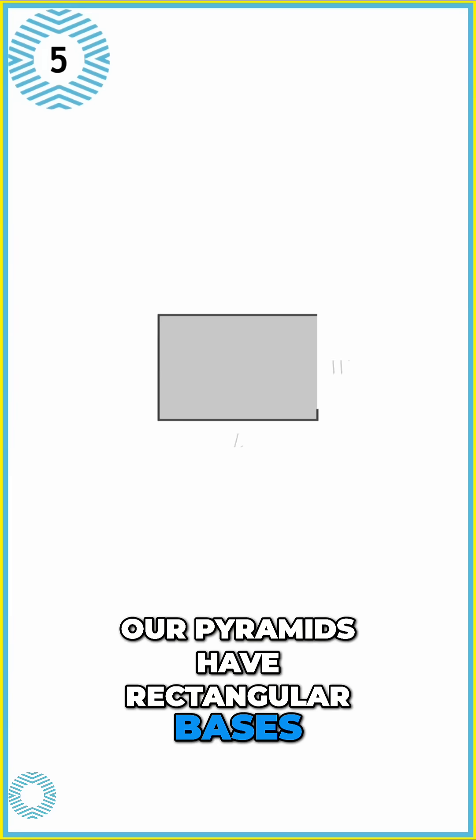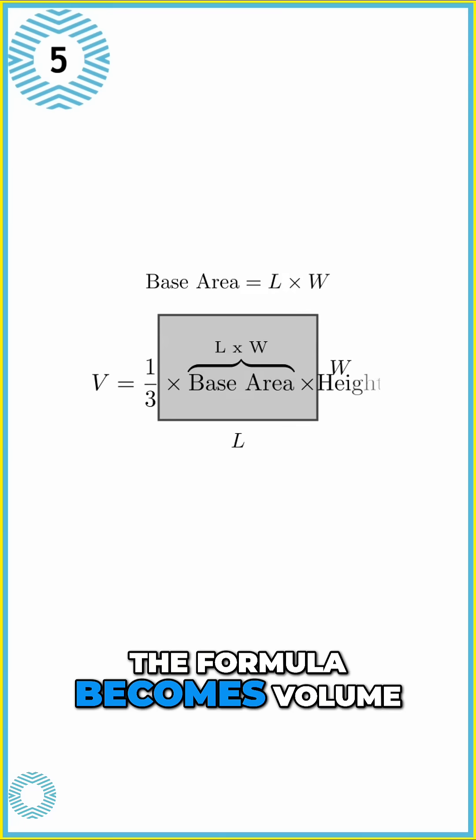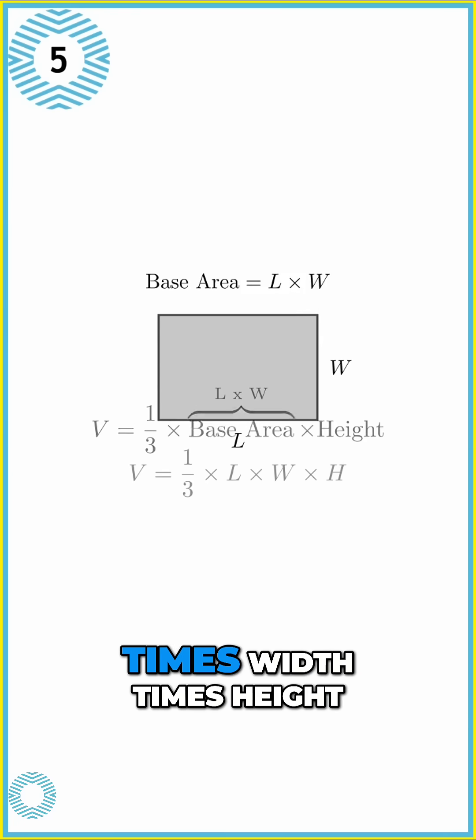Now our pyramids have rectangular bases. The area of a rectangle is just length times width. So the formula becomes volume equals one-third times length times width times height.